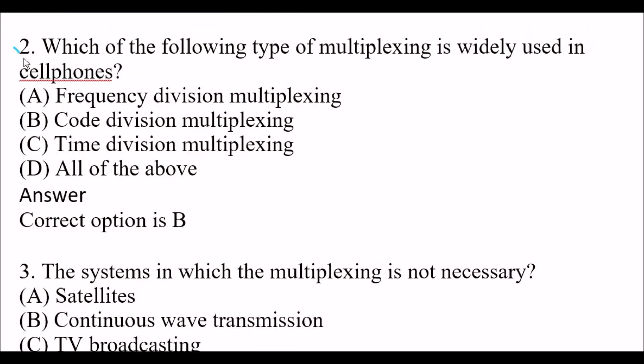Next question: Which of the following types of multiplexing is widely used in cell phones? Option A: frequency division multiplexing. Option B: code division multiplexing. Option C: time division multiplexing. Option D: all of the above. The right answer is Option B, code division multiplexing.